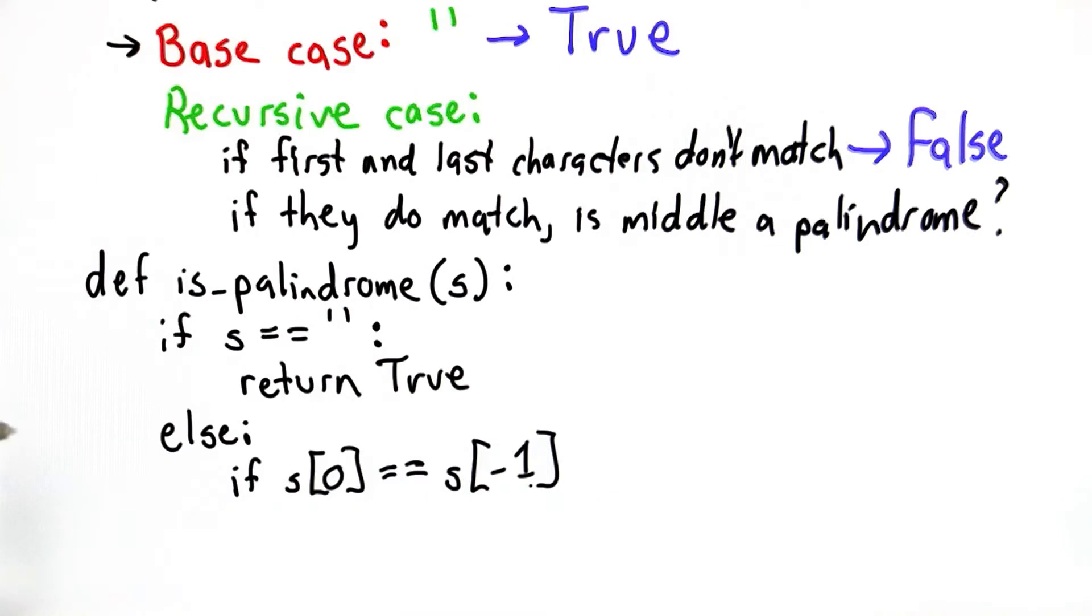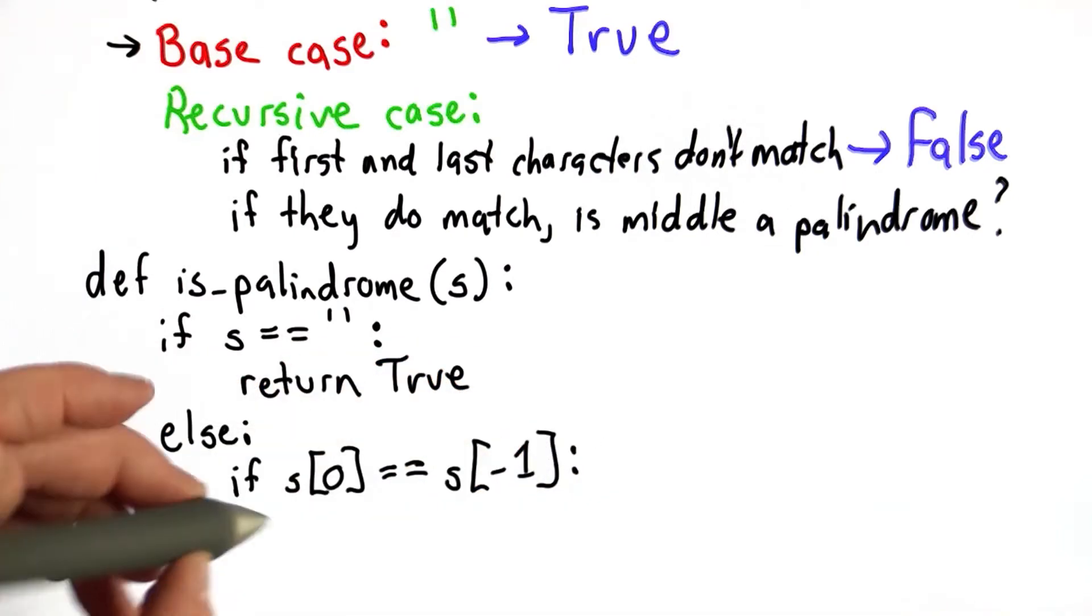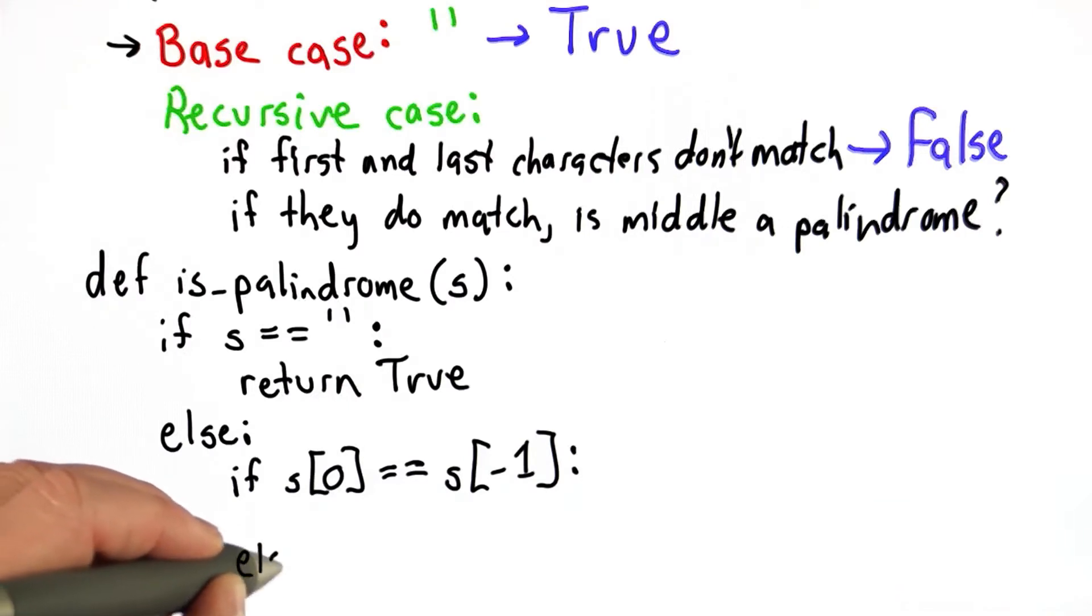If they match, then we need to check the rest of the string. If they didn't match, and let's finish the didn't match case first. If they didn't match, then we know it's not a palindrome because we found a place where the first and the last character did not match. So we should return false right away.